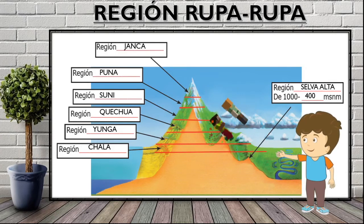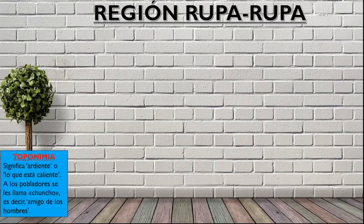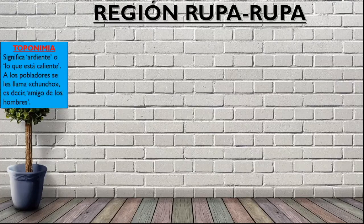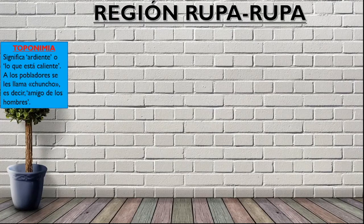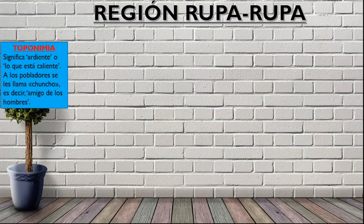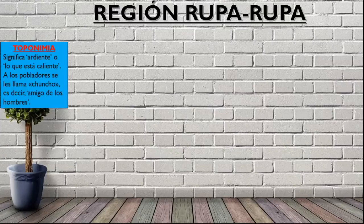Desde los 1000 metros hasta los 400 metros sobre el nivel del mar, esto corresponde a la Selva Alta. Vamos a ver cuáles son las características de esta Selva Alta o Rupa Rupa. Primero, ¿qué significa Rupa Rupa? Lo coloqué en el título para que sea entendible al momento de usar la toponimia. Rupa Rupa significa «ardiente» o «lo que está caliente». A los pobladores de la Selva Alta se les conoce como chunchos, que quiere decir «amigo de los hombres».